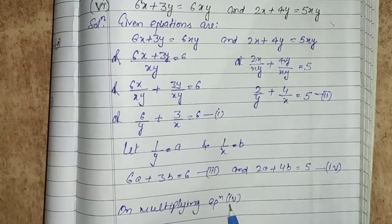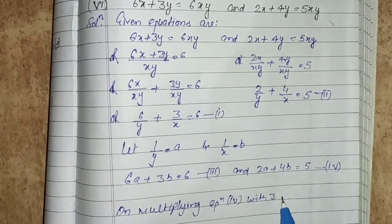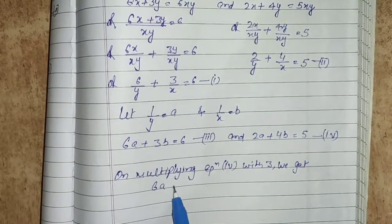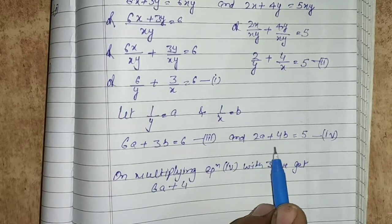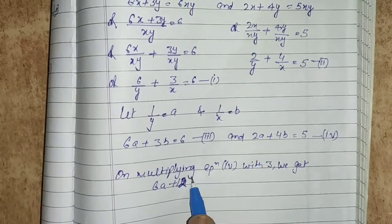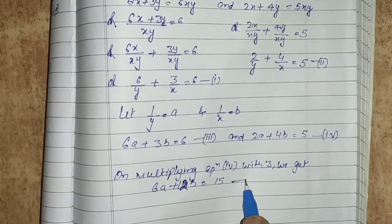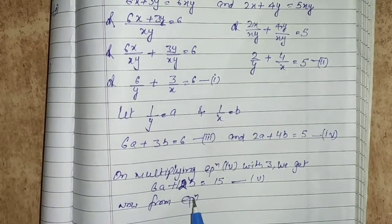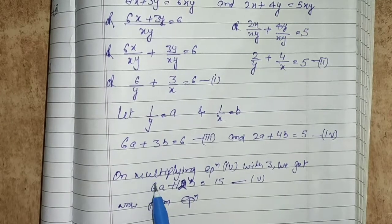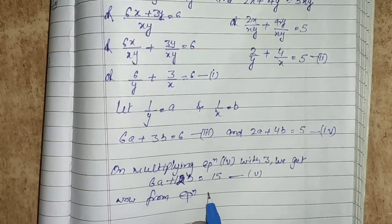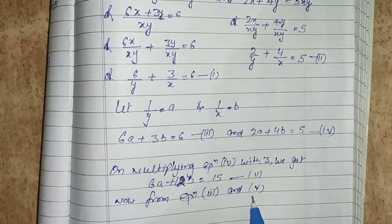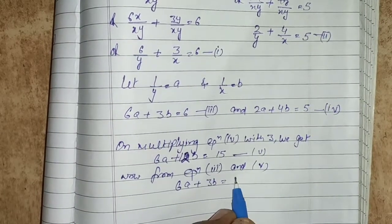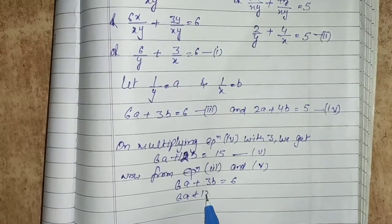Multiplying equation 4 by 3: 6a plus 12b equals to 15. This is equation number 5. Now from equation 3 and equation 5, we can see the coefficients of a are equal: 6a plus 3b equals to 6 and 6a plus 12b equals to 15.